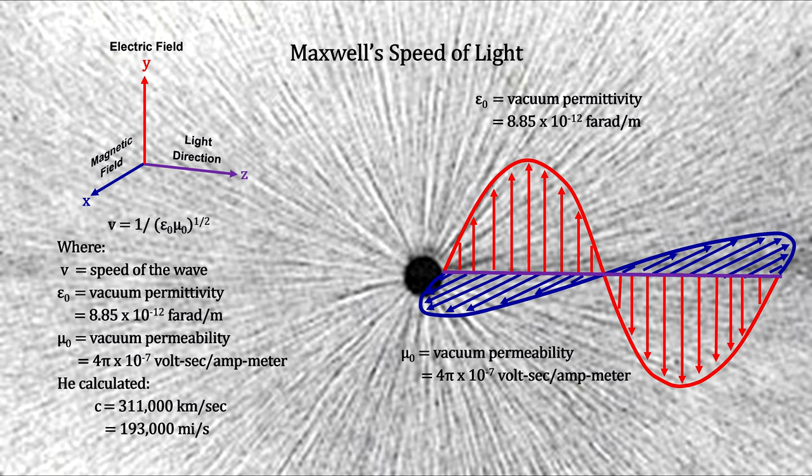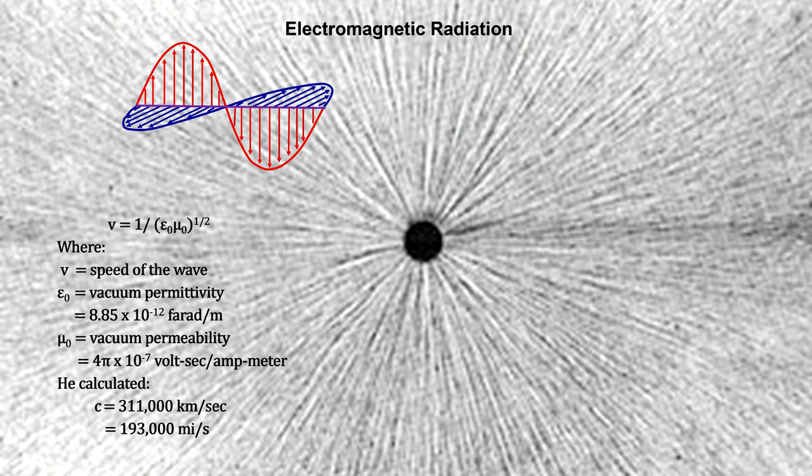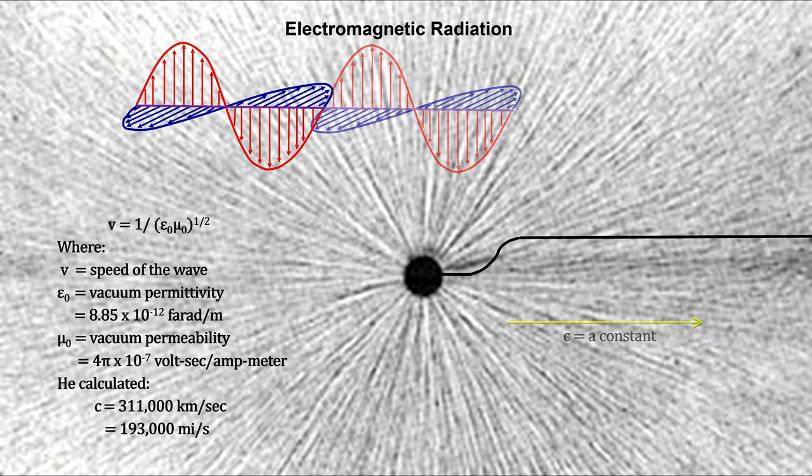In 1864, using their numbers, Maxwell calculated the speed of his waves at around 311,000 kilometers per second, or 193,000 miles per second. This was in good agreement with Fizeau's for light. Maxwell had demonstrated that light, indeed, is an electromagnetic wave.